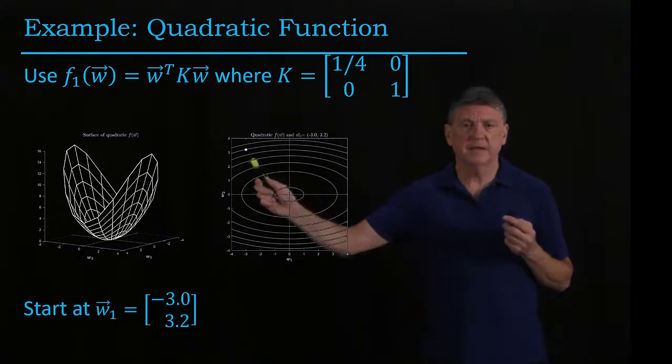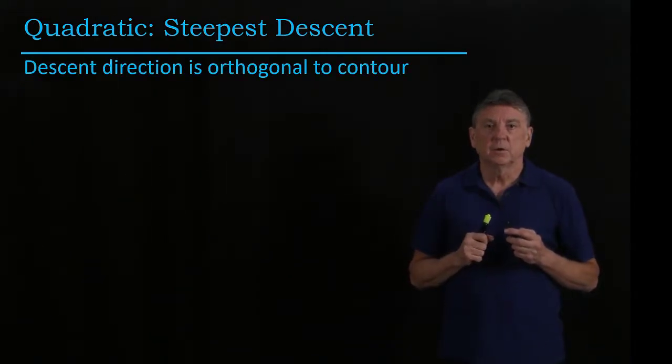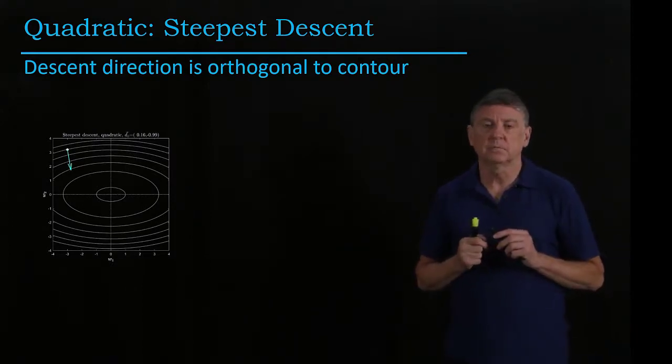So let's start off at this point. When we do this, what we discover is that the descent direction is orthogonal to the contours. That will later turn out to be an important matter.